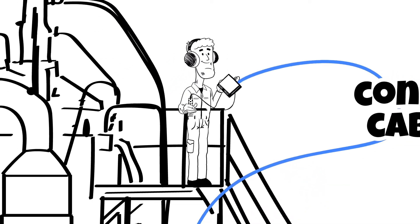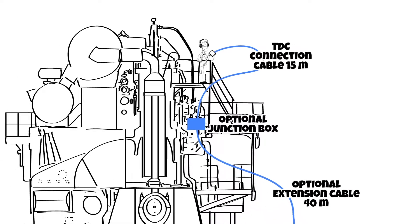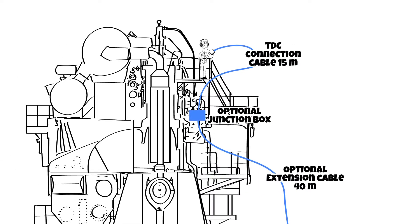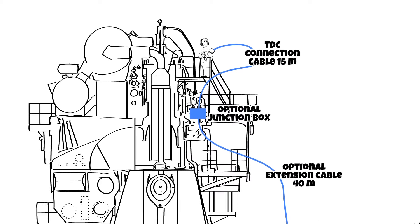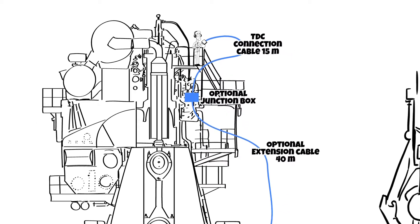For easy connection at larger engines, an optional junction box can be mounted close to the cylinders where the pre-mid is used to take a measurement. This would come with a 40 meter cable connecting to the junction box at the flywheel.